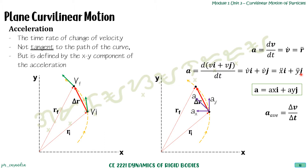For plane curvilinear motion, applying x and y components, we are analyzing the motion of the particle in a curved path through two separate rectilinear motion analyses — either x and y, yz, or xz.